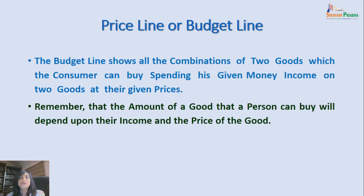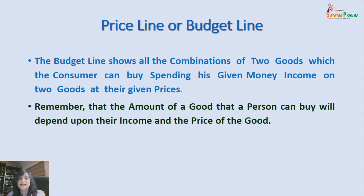Let me do a small recap of what we have been discussing in this unit. We are talking about consumer behavior, wherein we are trying to understand how a consumer decides what goods he has to buy and how much of those goods he has to buy so that his utility is maximized. We have already understood the cardinal approach, and right now from lecture 3 we have been doing the ordinal approach, which is the indifference curve approach. Indifference curve is a graphical representation of the combination of two goods which give the same level of satisfaction to the consumer.